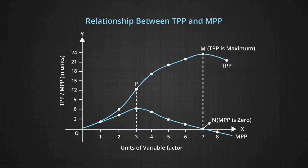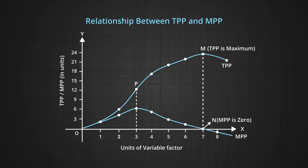We can discuss the relationship between TP and MP. On the X axis, we have taken the units of the variable factor, and on the Y axis, we have taken the production curves as TPP and MPP. With the employment of the first unit of the variable factor, keeping land fixed, TPP is increasing at an increasing rate till the point P. Beyond P, TPP still increases but at a decreasing rate. The point P is therefore called a point of inflection — it indicates the point at which the TPP curve changes shape from an increasing rate of increase to a decreasing rate of increase. The marginal physical product increases till P, where it reaches its maximum.